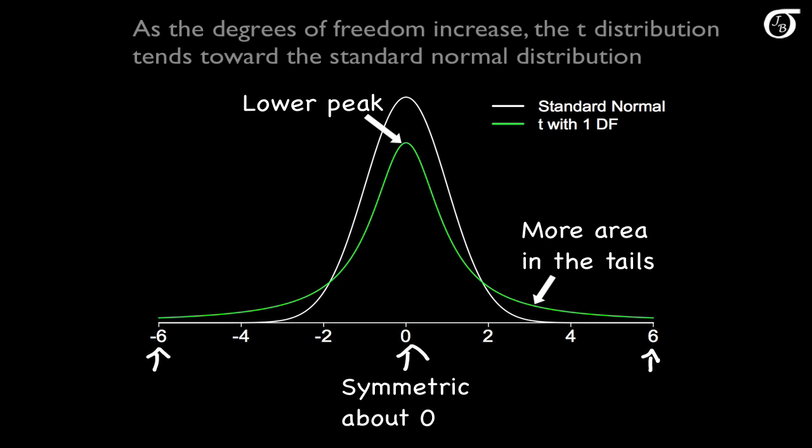As the degrees of freedom increase, the t-distribution tends toward the standard normal distribution. I'm going to let the degrees of freedom increase from 1 through 20, and we'll see what happens.